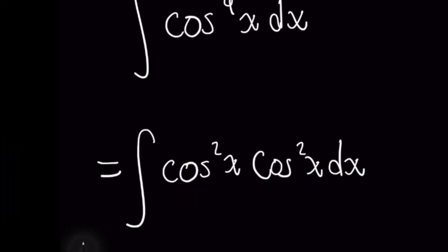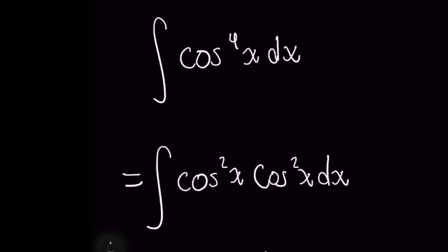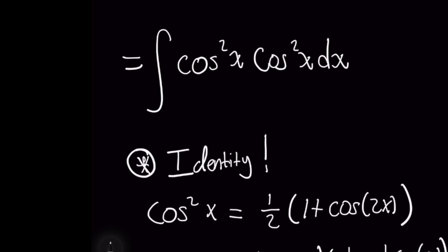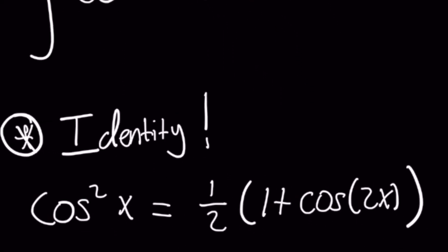You might be wondering why I'm doing that because it looks like we're making things tougher, but we really aren't. The beauty of this is that we can then use a trig identity for cosine squared of x. Do you remember that it's the same as one-half times one plus cosine of 2x?